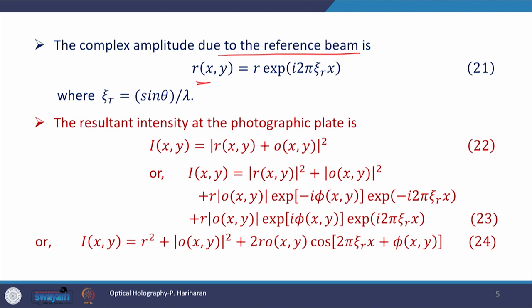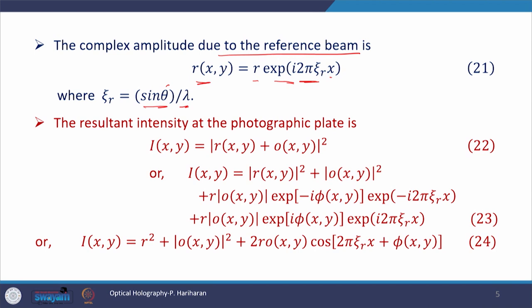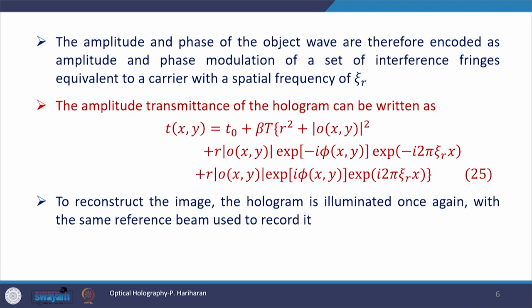The complex amplitude of the reference beam is represented by R, the same representation used in the on axis hologram. Here R is represented by R times e to the power i 2 pi psi_R x, where psi_R is sin(theta) divided by lambda, and theta is the angle shown in the figure. The resultant intensity at the photographic plate is given by |R + O| squared, using the superposition principle. Substituting the values of R and O from equations 20 and 21, we finally get equation 24, which is the resultant intensity at the photographic plate due to both the reference beam and the scattered beam from the object.